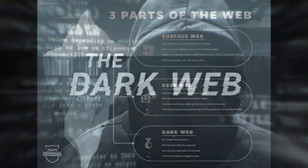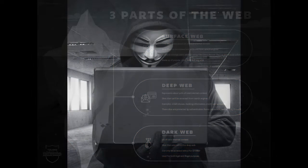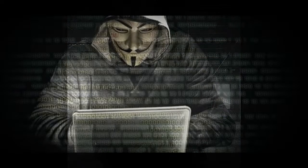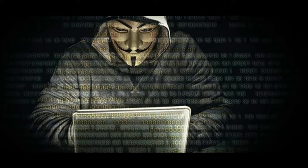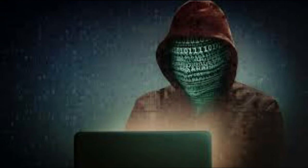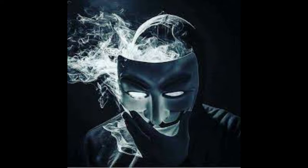The term 'dark web' refers to encrypted online content that is not indexed by conventional search engines. Accessing the dark web can only be done using specific browsers such as the Tor browser. A great deal of privacy and anonymity comes with using the dark web compared to traditional websites. As such, most attention is placed on online marketplaces for drugs, exchanges for stolen data, and other illegal activities when people think of the dark web.